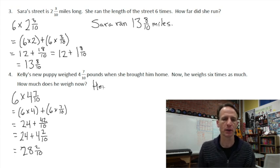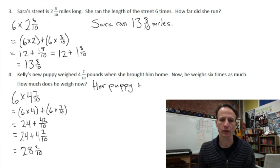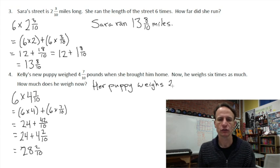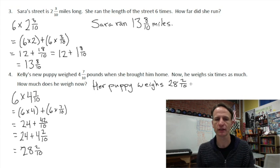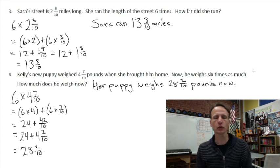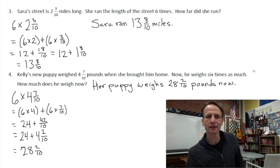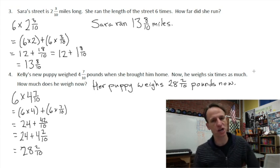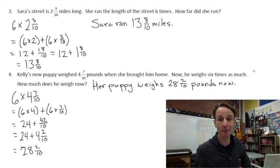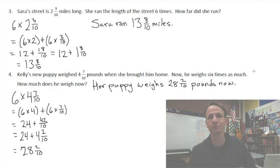All right, so put it all together. 24 and 4 make 28, and then we have those two-tenths. So our little simple statement here is: her puppy weighs 28 and two-tenths pounds now. Wow. And look what you've done. You've gone and done it again. That was a pretty good one, huh? This homework time is complete. Nice job. I'll see you again next time it is once again homework time.